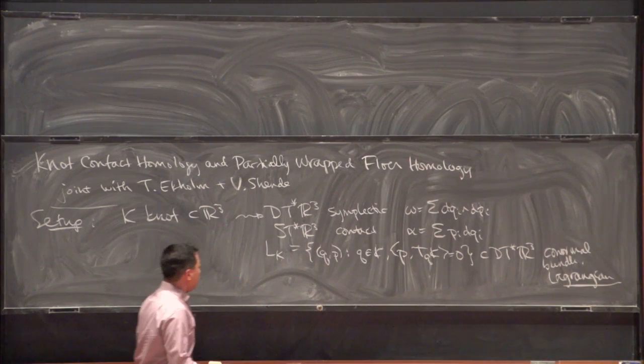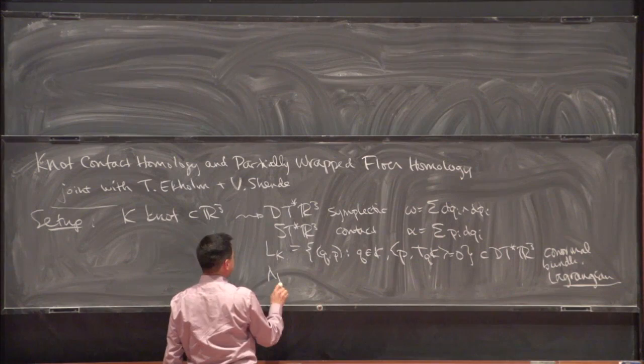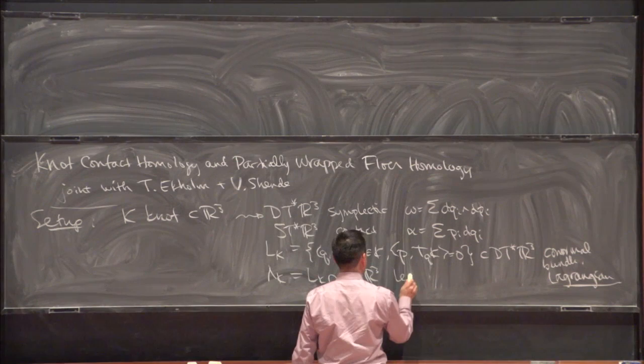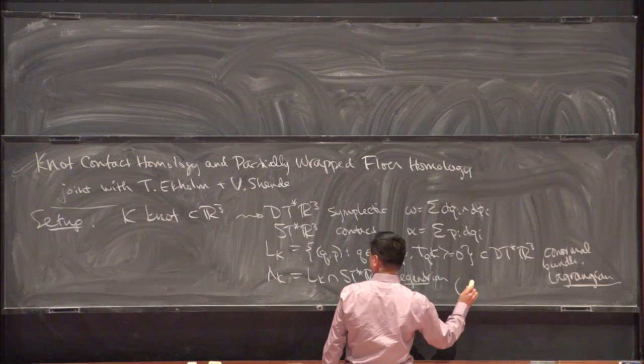Inside of this contact manifold, the contact boundary, we can look at the intersection of this Lagrangian with the contact boundary. This intersection is Legendrian — the contact one-form, if you pull it back to this, is identically zero.